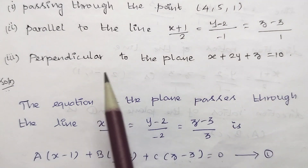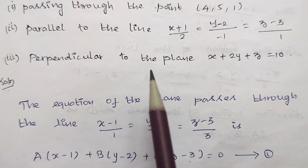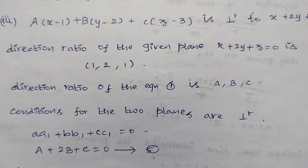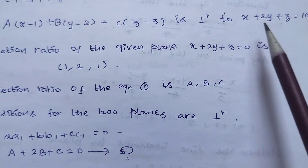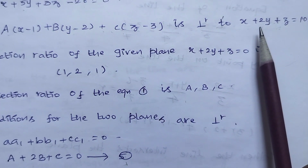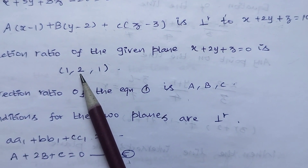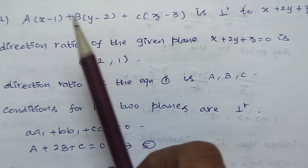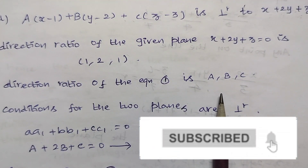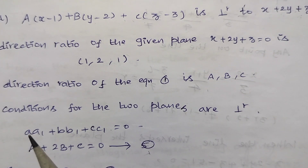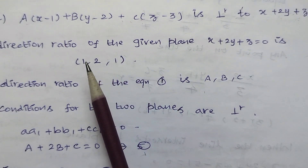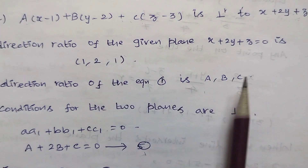For Subdivision 3, the required plane is perpendicular to the given plane x+2y+z=10. The given plane's direction ratios are 1, 2, 1. The condition for two perpendicular planes is AA1 + BB1 + CC1 = 0, giving: A + 2B + C = 0. Name this equation 5.